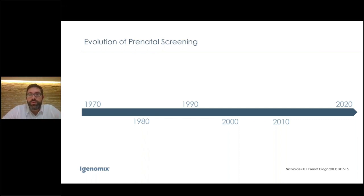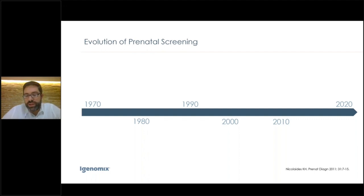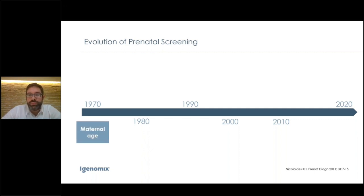Why don't we prescribe amniocentesis for every pregnant woman? The first reason in most places is economical — we cannot afford it for every single woman. Second, the invasive testing — amniocentesis or CVS — carries a risk of spontaneous miscarriage, between 1 in 1000 and 1 in 100. This is why researchers looked for specific ways to estimate aneuploidy risk during pregnancy without invasive procedures.